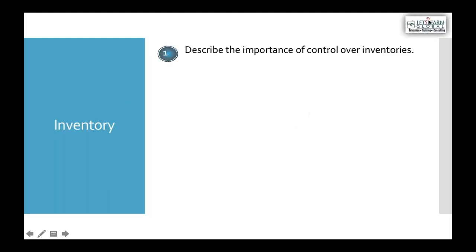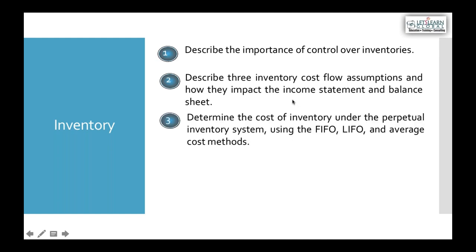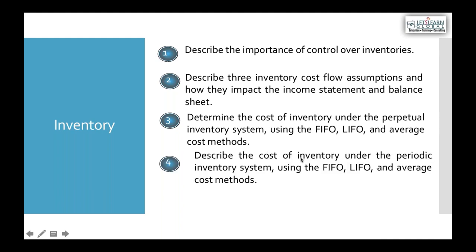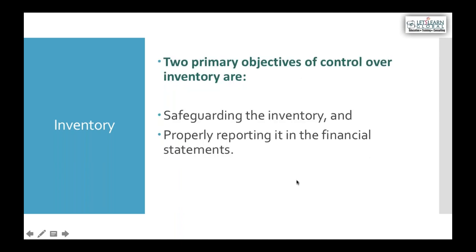We have inventory in our showroom, factory, and warehouse. Key questions include: how do we control, record, supervise, and issue inventory? What cost flow methods do we use? We'll discuss FIFO, LIFO, and average cost methods and their impact on profits, as well as how errors in inventory should be accounted for.